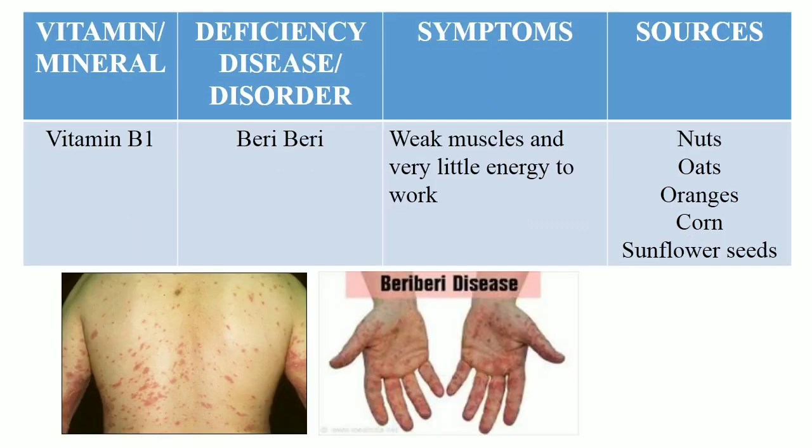Deficiency of vitamin B1 causes beriberi. It is a disease which causes weak muscles and very little energy to do work. Some sources of vitamin B1 are nuts, oats, oranges, corn and sunflower seeds.